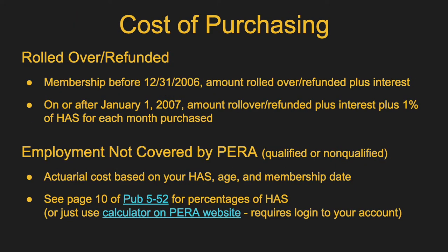Purchasing service credit is not cheap. For employment not covered by PERA — either qualified or non-qualified — it's going to be an actuarial cost based on your highest average salary, your age at the time you purchase, and your membership date. You can look at Publication 5-52, or much easier, just log into the calculator on the PERA website. It has all your information and will tell you exactly what it would cost to purchase years right now.